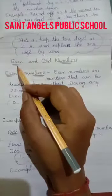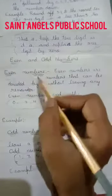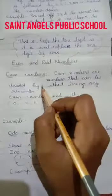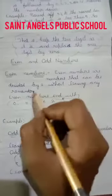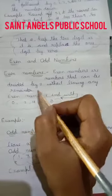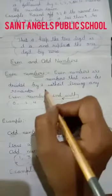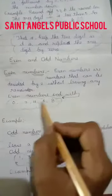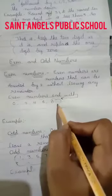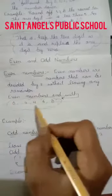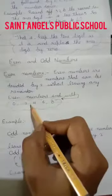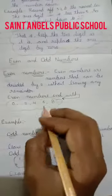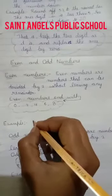Now we will discuss the next topic: even and odd numbers. Even numbers are numbers that can be divided by 2 without leaving any remainder. Jab aap 2 se divide kertay hai aur us mein aapka remainder nahi aata hai. Next rule: even numbers end with 0, 2, 4, 6, or 8. Jab aapka number 0, 2, 4, 6, 8 ke saath end hota hai, ho aapka even number hota hai.